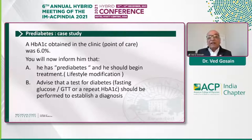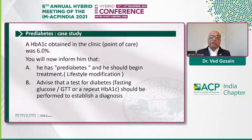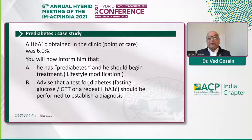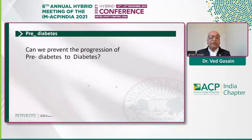Should you inform him that he has pre-diabetes and begin treatment — mainly lifestyle modification? Or would you advise that another test for diabetes — a fasting glucose, glucose tolerance test, or repeat hemoglobin A1c — should be performed to establish a diagnosis? I'll let you think about it, and we'll come back at the end of the presentation.